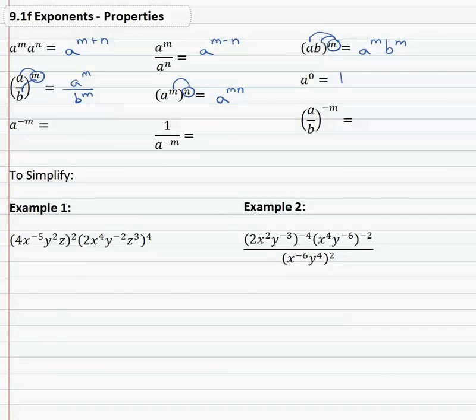We also saw that anything to the zero power is always equal to one. And then finally we saw the negative exponent rules, which basically tell us to move the base either up or down making the exponent positive. So if we have a to the negative m, that's technically over one, which means we need to move the a down into the denominator as a to the m with a one on top. If the negative exponent's in the denominator, we'll move a to the m up to the numerator.